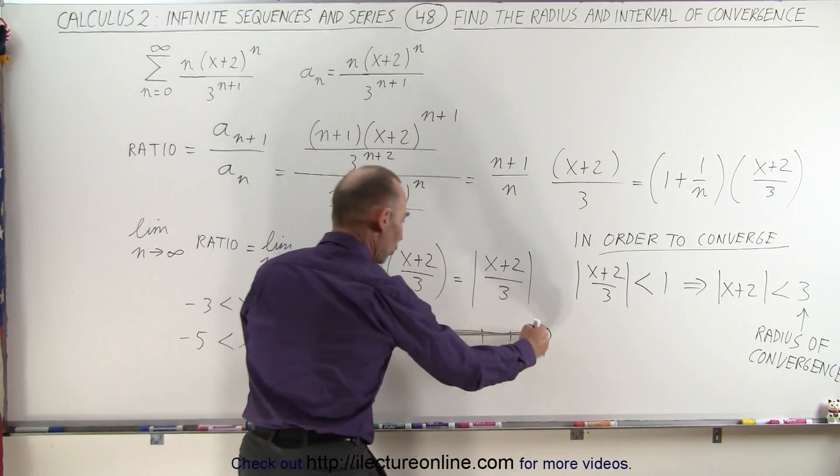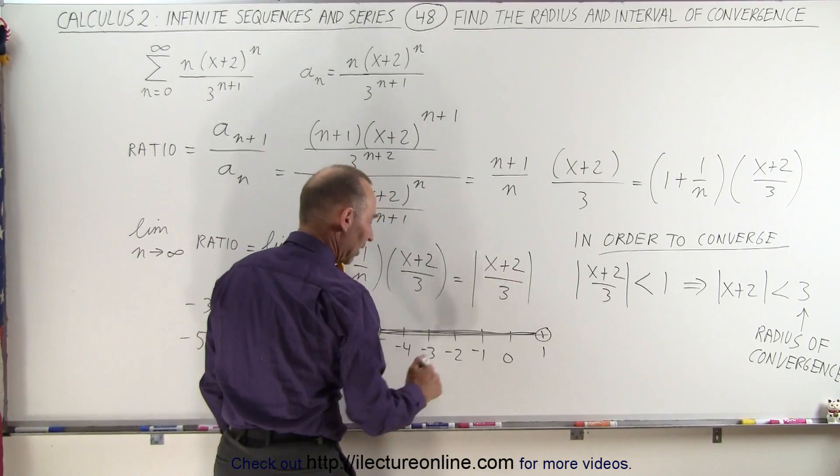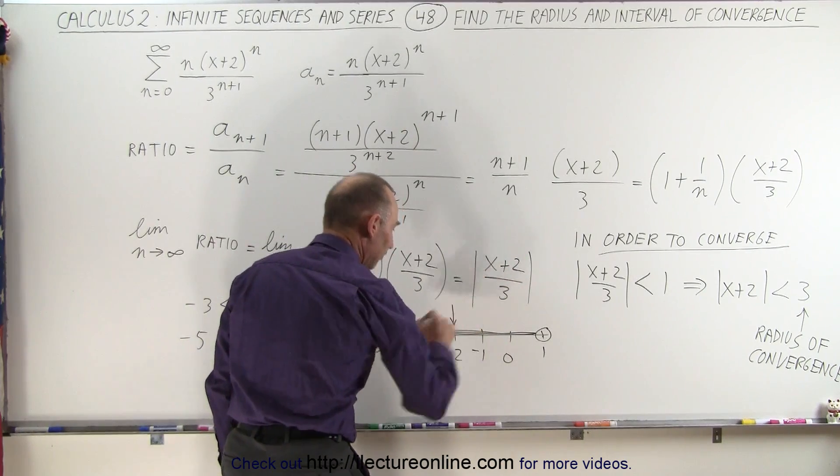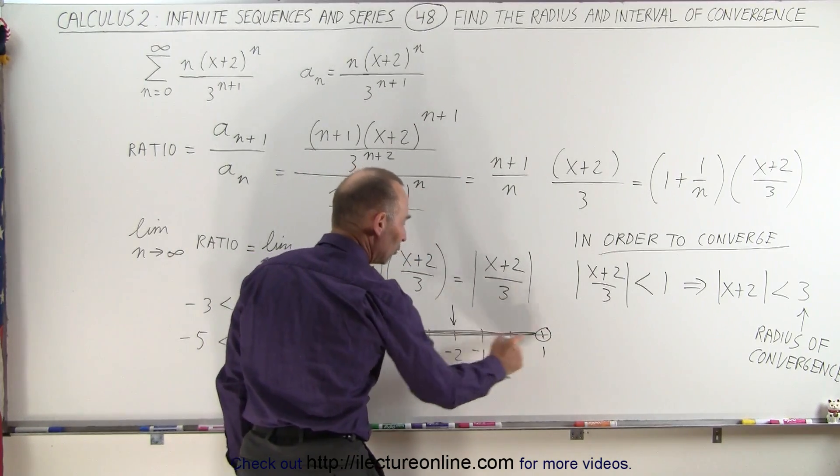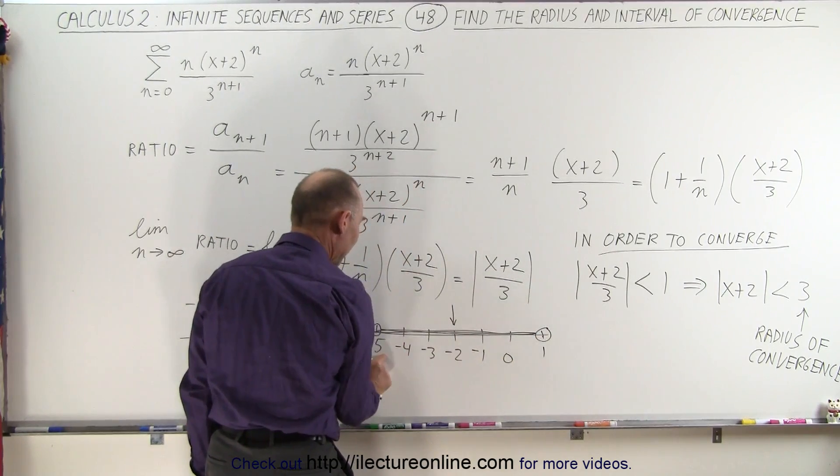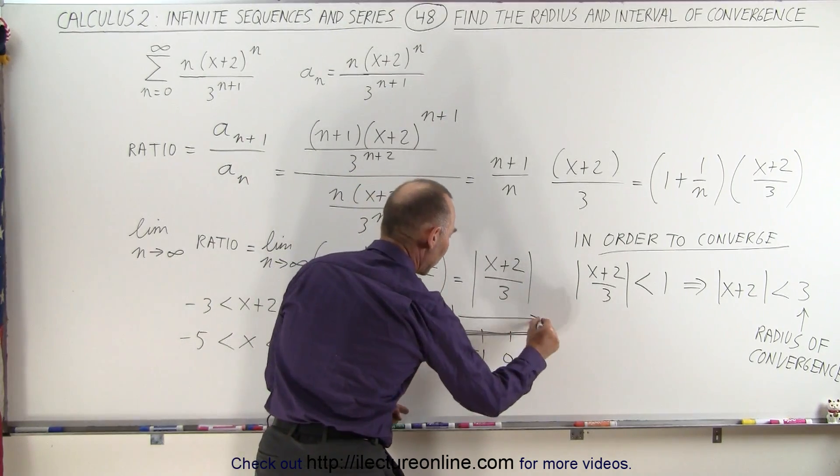Notice that the total distance from 1 to -5 numerically is 6. The middle value is -2, and the distance from the middle value to the edge of that range, from -2 to 1, or from -2 to -5, that is 3 units in either direction.